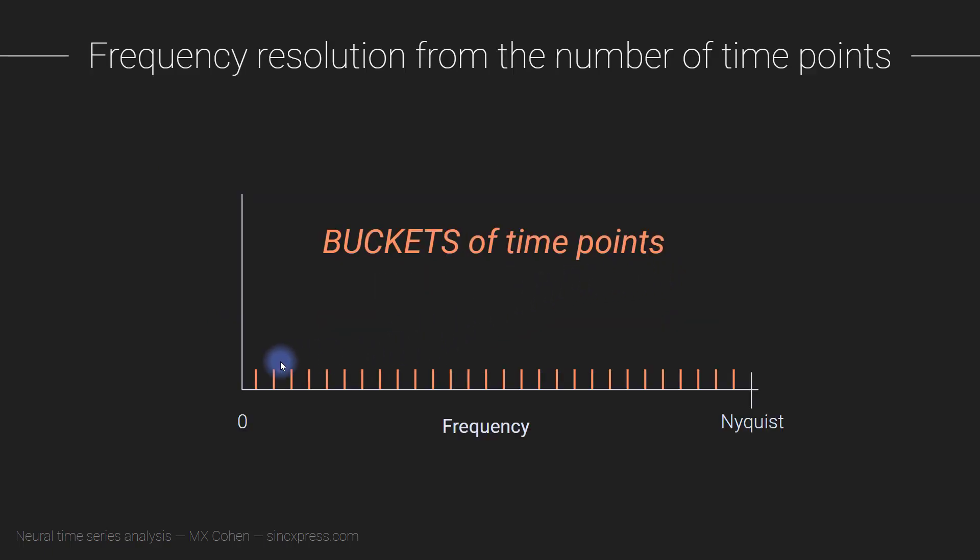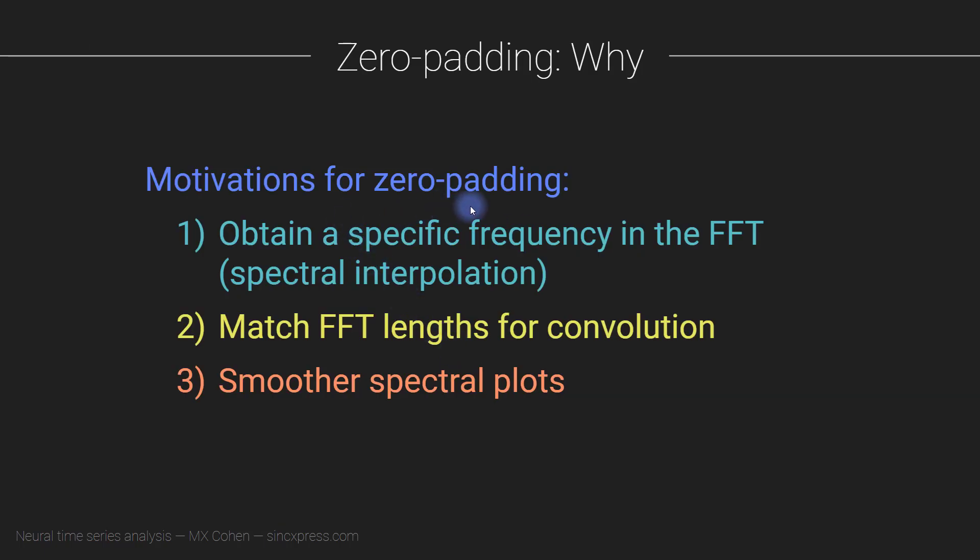One of which I already mentioned: to obtain a specific frequency in the FFT transform. Imagine this resolution is the highest you can get with the data segment that you have, but maybe it's really important for you to get exactly this frequency here. Based on the raw segment you have, the original data segment, you don't have any way of knowing what was going on here. So what you do is add zeros to the end of the signal, and that allows for more frequencies, more sine waves to be constructed.